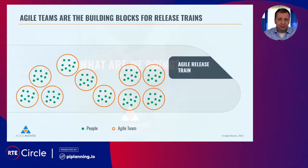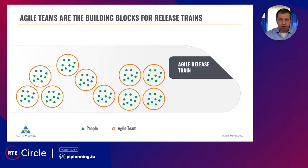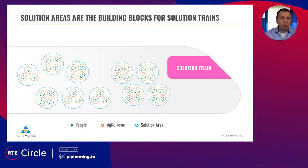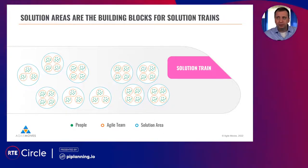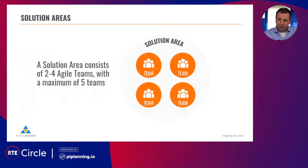So here is a typical agile release train — the green dots are people, the orange circles are the agile teams within the release train. If you look at a solution train, what we usually do is try to group the agile teams into solution areas of two to four teams — like mini trains, you could say. Solution areas are usually much more flexible and they are a good training ground for organizational skills.